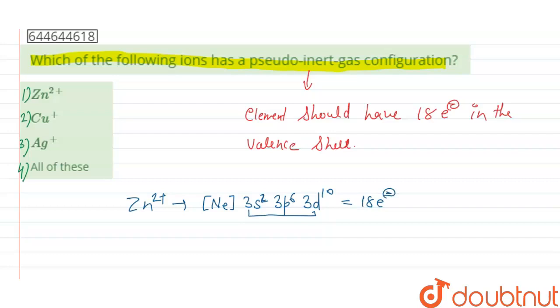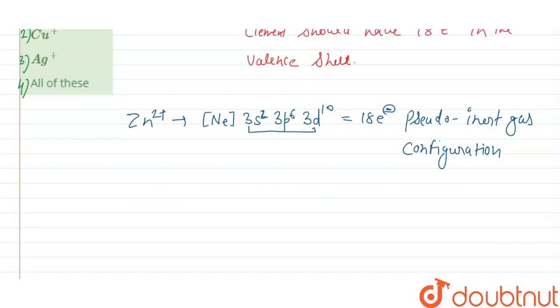So Zn2+ shows pseudo inert gas configuration. For the second option, copper plus, the electronic configuration of Cu+ can be written as [Ne] 3s2 3p6 3d10.